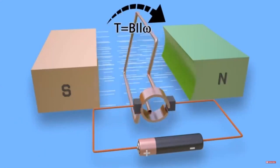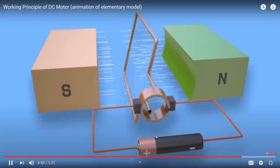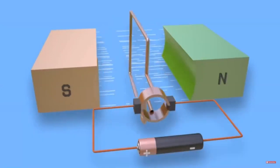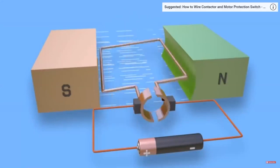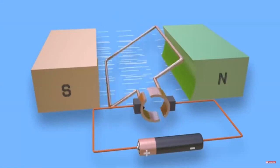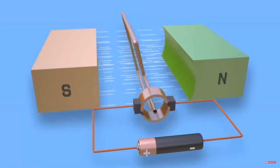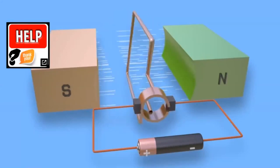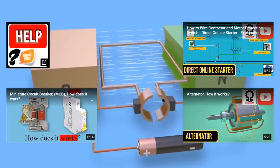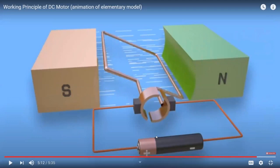From that explanation, we can conclude that whichever conductor comes near the south pole experiences an upward mechanical force, and near the north pole, a downward mechanical force. These two forces continuously cause the armature to rotate. In a practical DC motor, instead of a single turn, there are many turns on the armature coil, and instead of two poles, there are multiple poles installed.